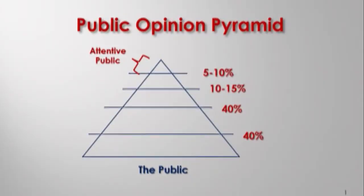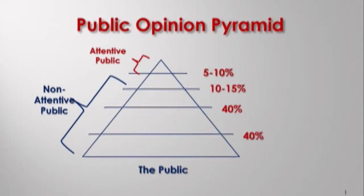This brings me to another important distinction. If you look at the pyramid, you will see that the top 5% to 10% are the people I call the attentive public. The attentive public comprises no more than 5% to 10% of the population. The remainder are the non-attentive public. So later on when I refer to the attentive public, I'm talking about individuals who are very well informed about politics, know the crisis of the day, know which side we're on — and I'm proposing that number is not very large; it's rather small.